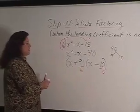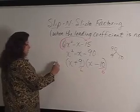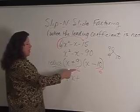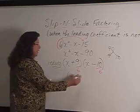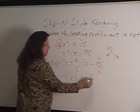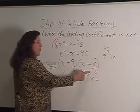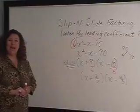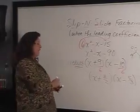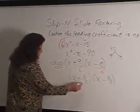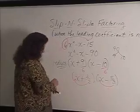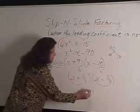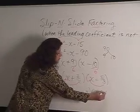Then we reduce our problem. So we want to make sure we reduce those fractions first. They have a common factor of 3. These have a common factor of 2. And then we're going to slide those denominators back in front of the x. So we end up with 2x plus 3 times 3x minus 5.